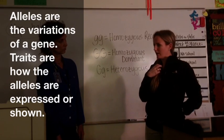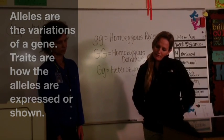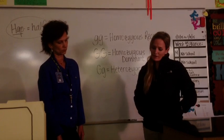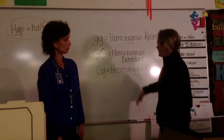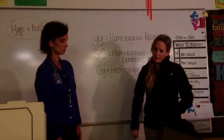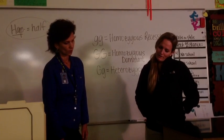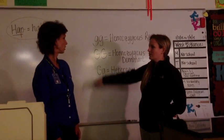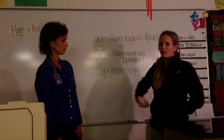My blonde hair is the expressed allele for that trait. And that trait is what the letter represents. So in this case, the G for green plants would be the trait. The allele is the options for that trait — if it's big G it would be green, if it's little g it could be yellow.